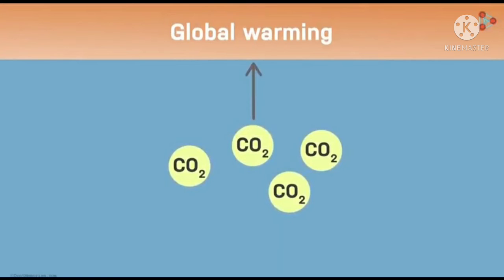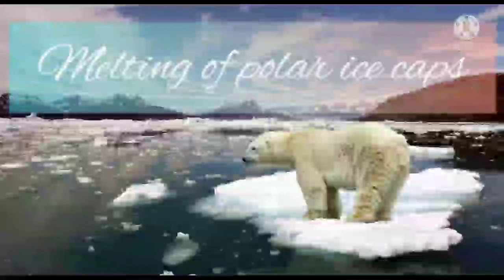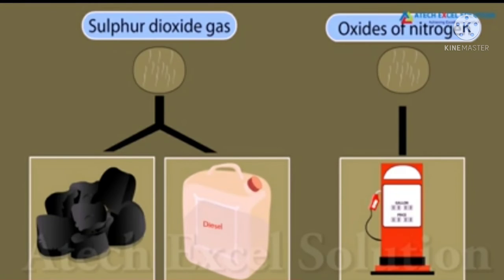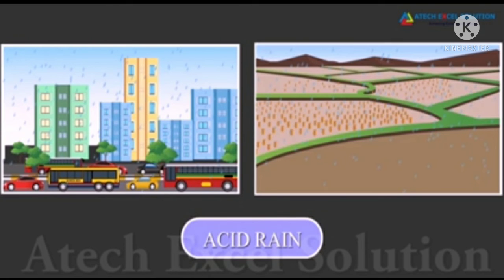Increased concentration of carbon dioxide in the air causes global warming — the rise in temperature of the Earth's atmosphere. This results in the melting of polar glaciers, leading to a rise in sea level and causing floods. Burning of coal and diesel releases sulfur dioxide gas, and petrol engines give off gaseous oxides of nitrogen. These gases dissolve in rainwater and form acids — such rain is called acid rain, which is very harmful for crops, buildings, and soil.